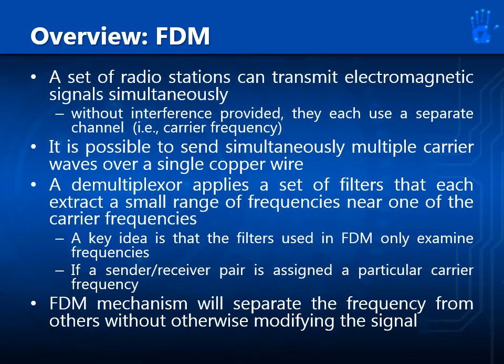A set of radio signals can transmit electromagnetic signals simultaneously without interference, provided they each use a separate channel — that is, separate carrier frequencies. This is why we modulate. It is possible to send simultaneously multiple carrier waves over a single copper wire. A demultiplexor applies a set of filters that each extract a small range of frequencies near one of the carrier frequencies. FDM will separate the frequency from others without otherwise modifying the signal.